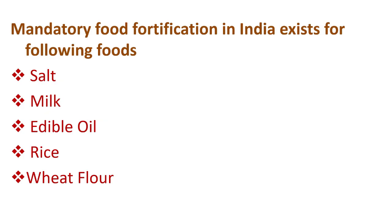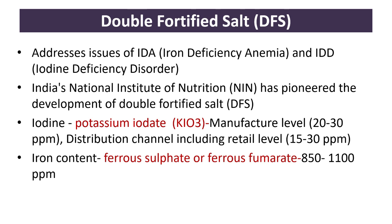Mandatory food fortification in India exists for salt, milk, edible oil, rice, and wheat flour. Double fortified salt addresses iron deficiency anemia (IDA) and iodine deficiency disorders (IDD). India's National Institute of Nutrition pioneered its development. Iodine (potassium iodate, KIO₃) at the manufacturer level should be 20–30 ppm, and at distribution/retail level 15–30 ppm. Iron content using ferrous sulfate or ferrous fumarate should be added in the limit of 850–1100 ppm.